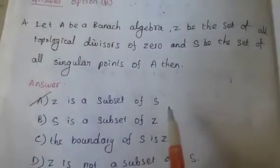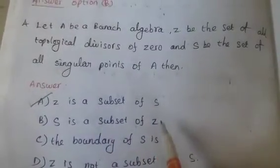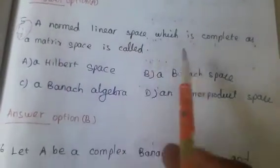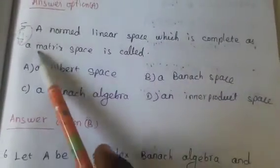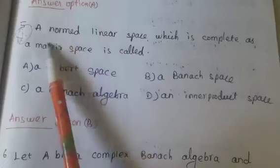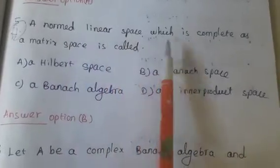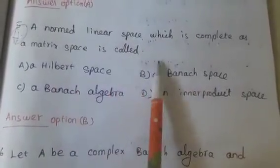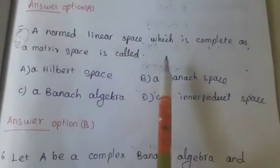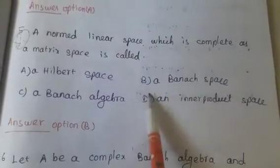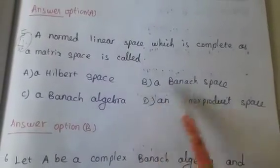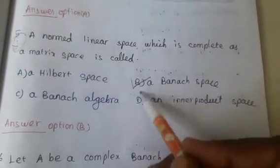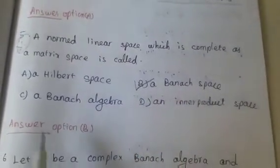Z is a subset of S — this is the correct answer. A normed linear space which is a complete metric space is called a Banach space. Absent B, Banach space, is the correct answer.